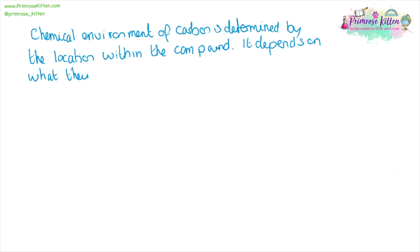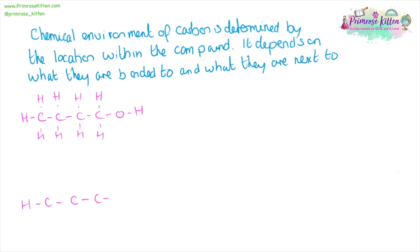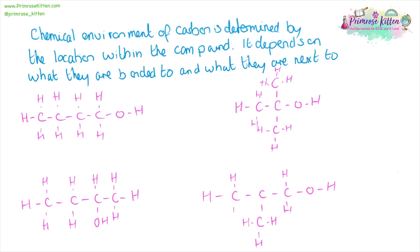The chemical environment of a particular carbon atom is determined by its location within a compound. It depends on what it is bonded to and what it is next to. Here we're gonna look at a couple of examples — all have the same formula but a different arrangement in space, and we're gonna look at the different carbon environments.